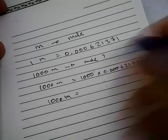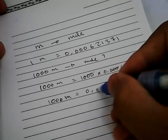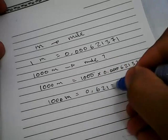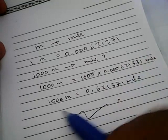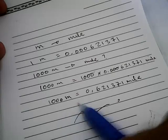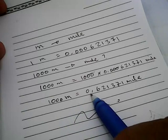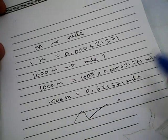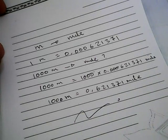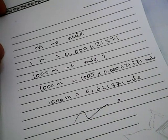Now, the result is 0.621371 miles. That's it. So 1000 meters equals 0.621371 miles. Thank you for watching, and I'll see you in another conversion. Thank you.